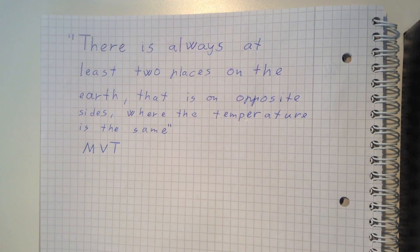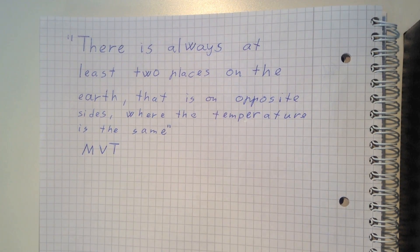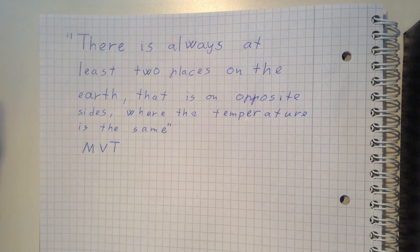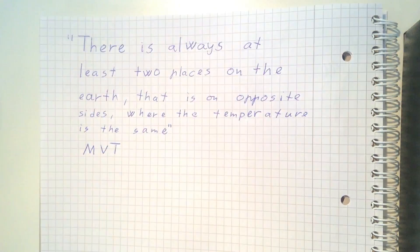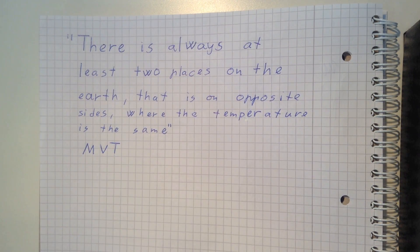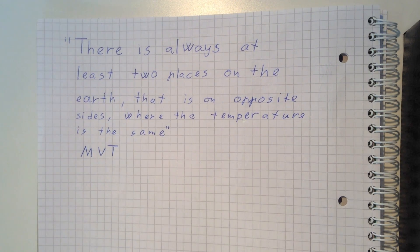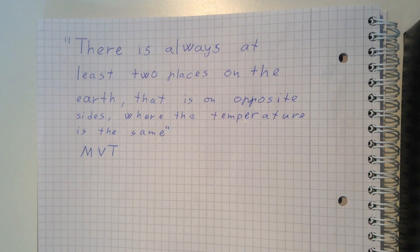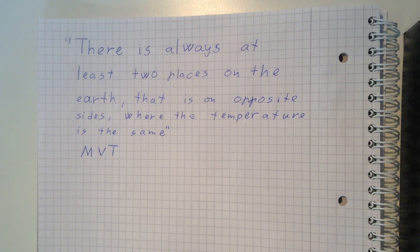So how can you prove this? It probably sounds a little bit like magic, but if you just draw the temperature as a continuous function around the Earth — let's assume that's along the equator — then you can see that this has to be true. And I'm going to prove it.